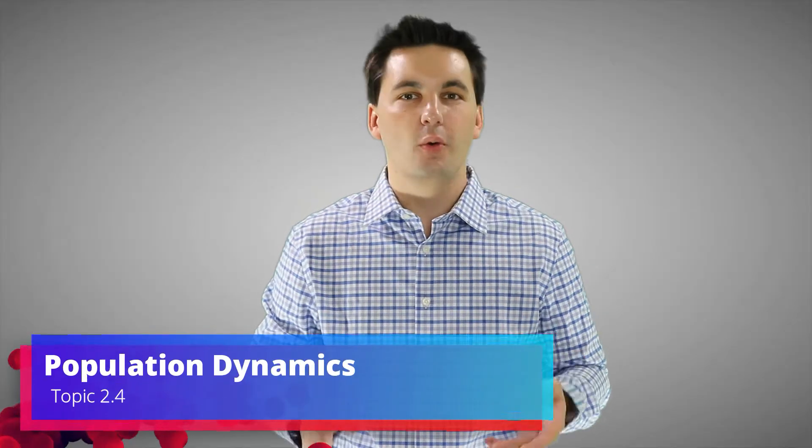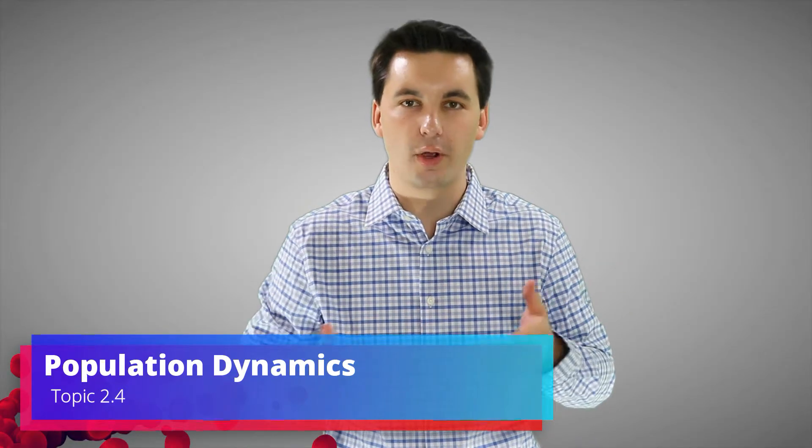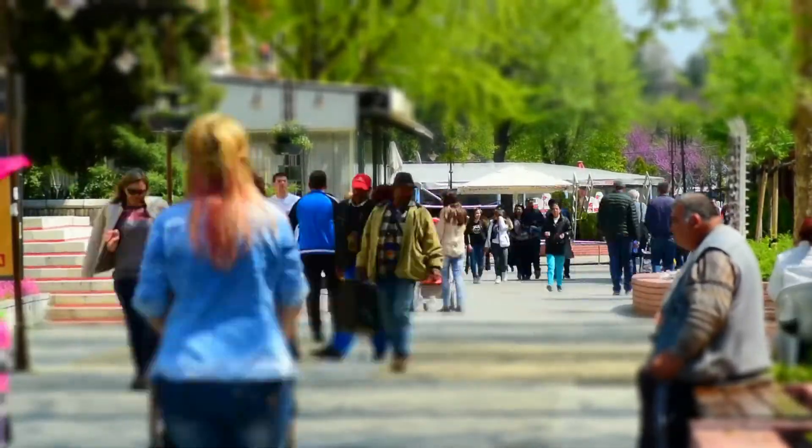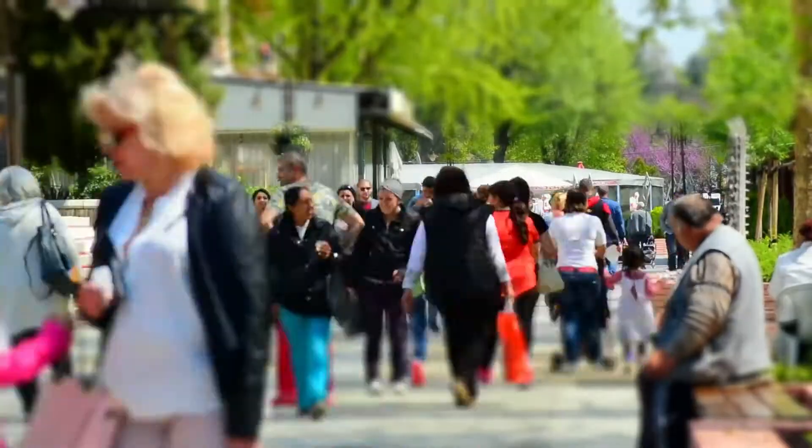Hey there geographers and welcome back to the Mr. Sin channel. Today we're going to be going into topic four of unit two. We're going to be looking at population dynamics. Now last time we talked about 2.3 where we looked at population pyramids, sex ratios, dependency ratios, and population composition in general. And now we're going to be expanding on a lot of those concepts and ideas. Now before we go into all the different reasons why we see natural births go up or down, we have to talk about some terminology.